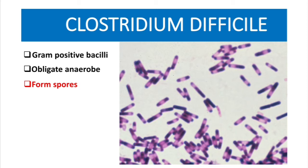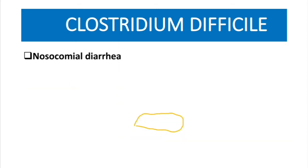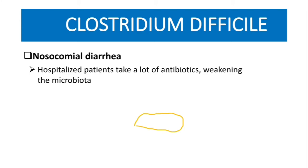Clostridium difficile is responsible for causing nosocomial diarrhea. This happens because hospitalized patients take a lot of antibiotics, which weaken the microbiota in our intestines. This allows germination of spores, ultimately causing diarrhea, as shown in the next slide on pathogenesis.